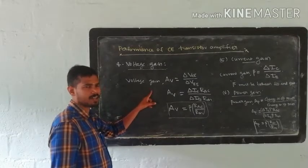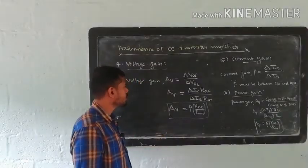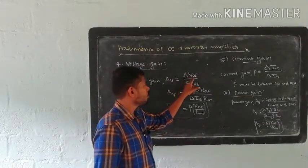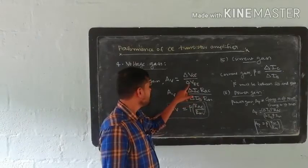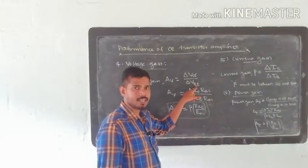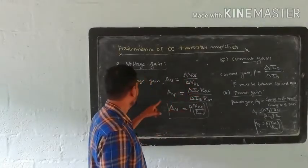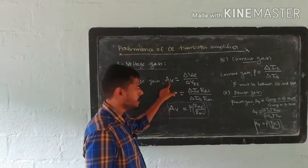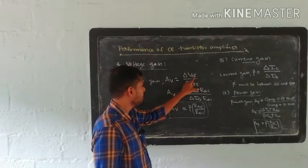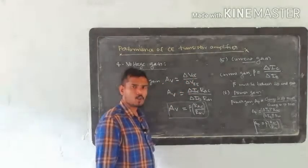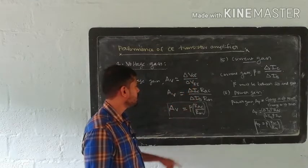Voltage gain is the ratio of output voltage to input voltage. In a common emitter transistor circuit, the output voltage is the collector emitter voltage VCE — that is delta VCE. The input voltage is the base emitter voltage — that is delta VBE. AV is equal to delta VCE by delta VBE.